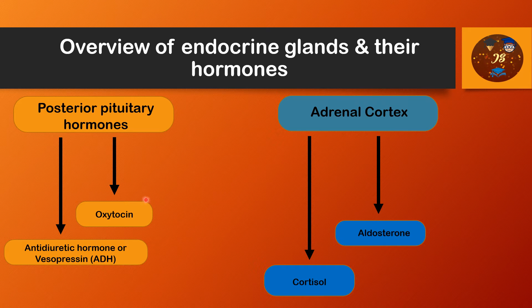The other posterior pituitary hormone is oxytocin. It contracts the uterus during the birthing process, helping expel the baby. It also contracts myoepithelial cells in the breast, thereby expressing milk from the breast when the baby suckles. So oxytocin is totally dedicated to the birth and nourishment of the baby.